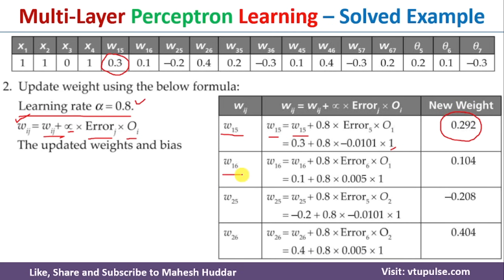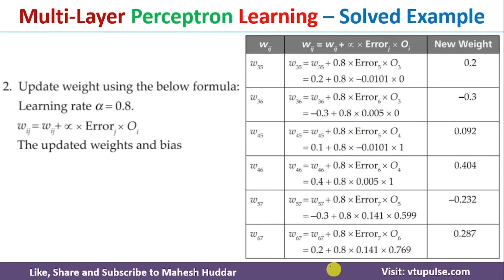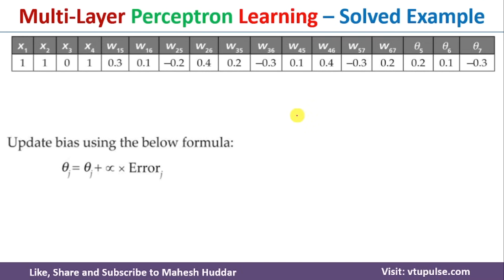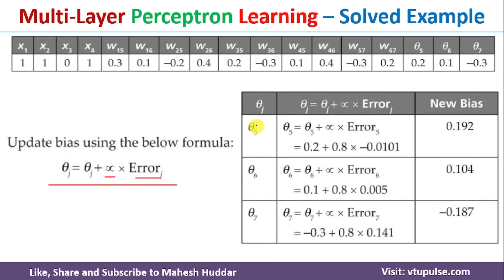Similarly, we update W16, W25, W26, W35, W36, W45, W46, and so on. The updated weights are written in this particular table. Once the weights are updated, the next step is to update the biases using the equation: theta_j(new) = theta_j(old) + alpha × error_j. We do not consider output here because the bias output is always 1. So theta5(new) = theta5(old) + 0.8 × error5.